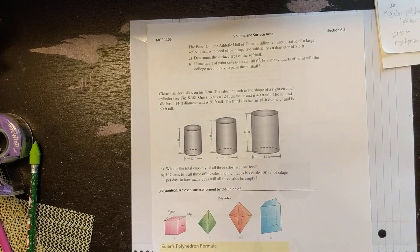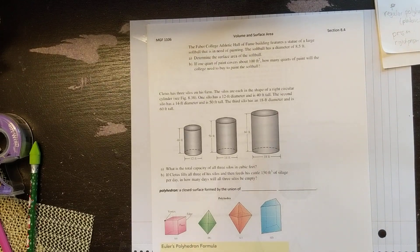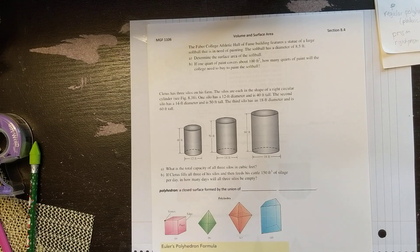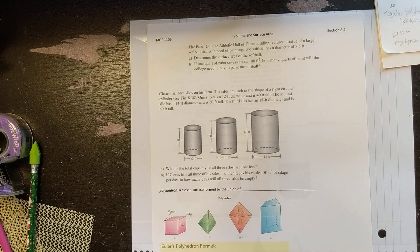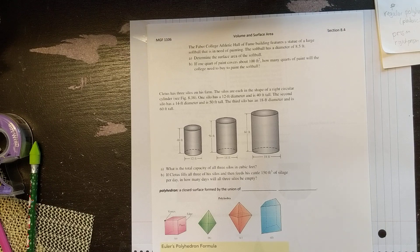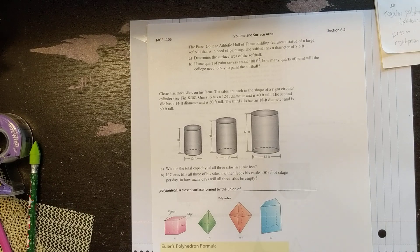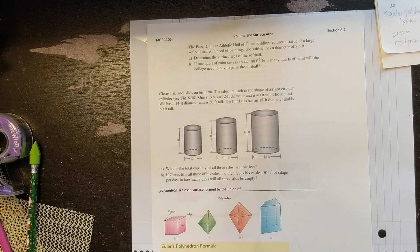Okay, section 8.4, we're about to wrap this up. Here is another nice example. It says the Faber College Athletic Hall of Fame building features a statue of a large softball that is in need of painting. The softball has a diameter of eight and a half feet. Determine the surface area of the softball.